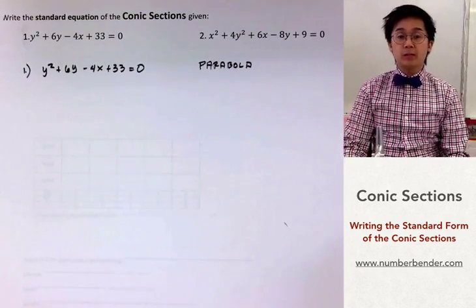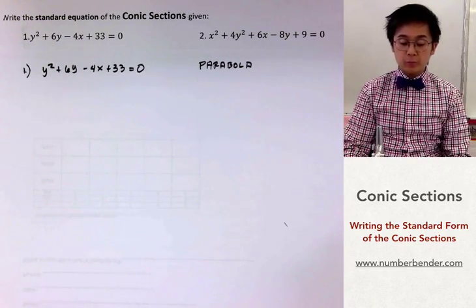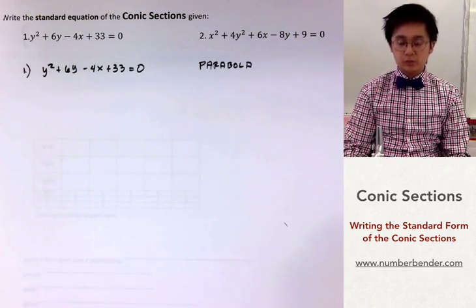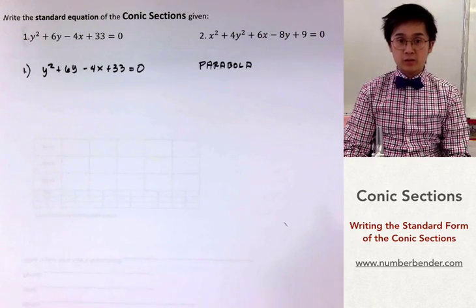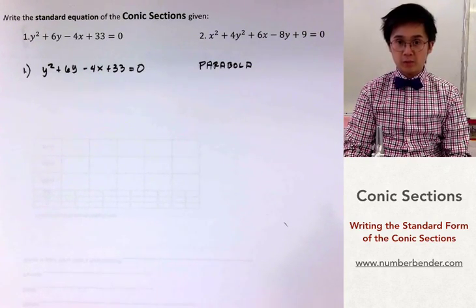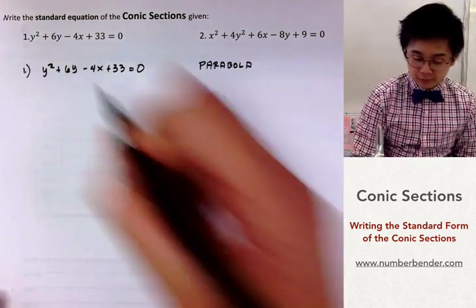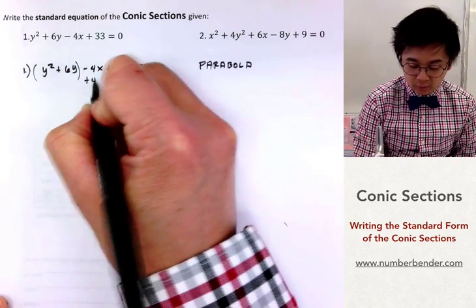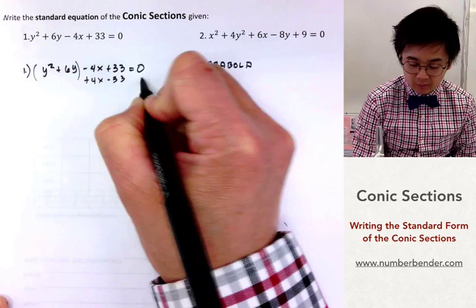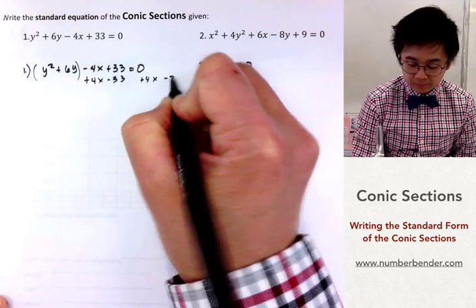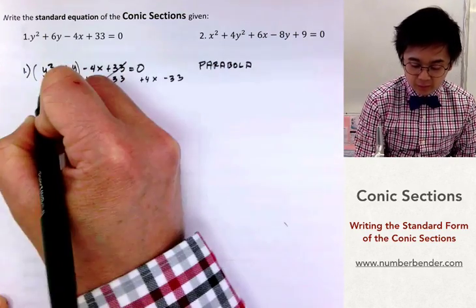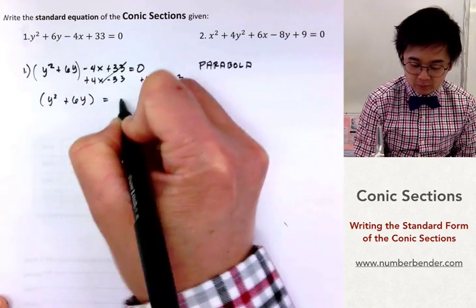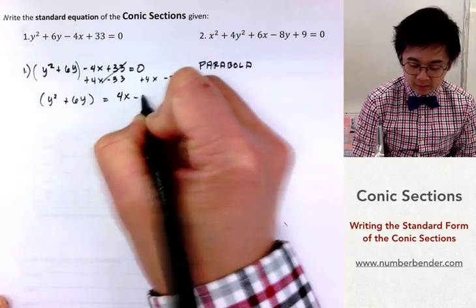Since it's a parabola, we're going to group the y together and then transfer the other terms on the other side of the equation to perform the completing the square technique. So this will be grouped together and we're going to add 4x and minus 33 on both sides, leaving us with y squared plus 6y equals 4x minus 33.